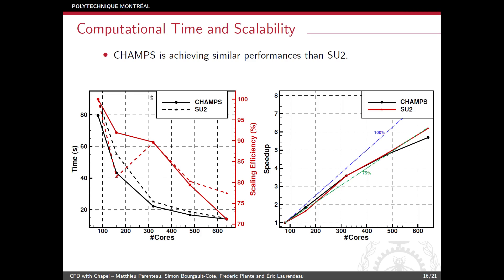On the left, we show the total computational time in seconds to complete 10 iterations of the flow solver — solid line for CHAMPS, dashed line for SU2. The overall computational time is very similar between both codes. On the right, we present the speedup for both codes, which is also very similar, with the only difference that at 640 cores, CHAMPS has a slightly lower scaling efficiency.